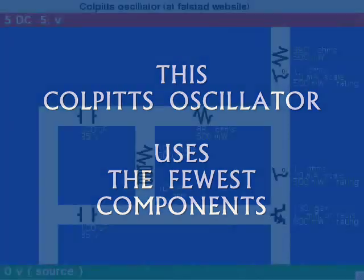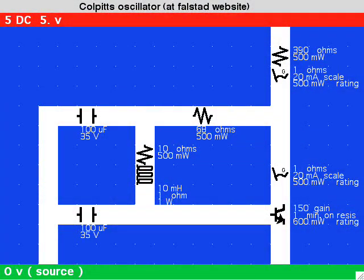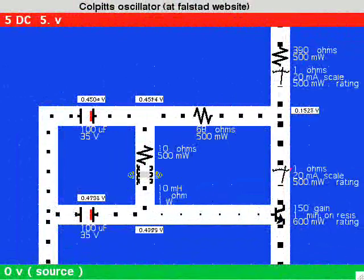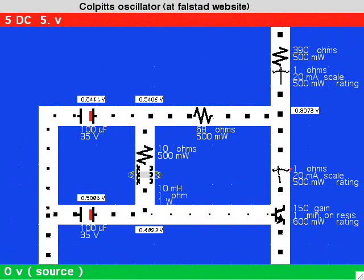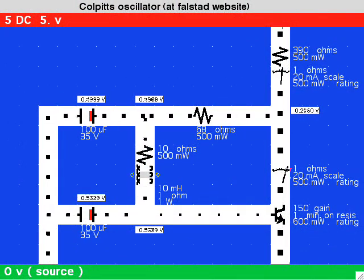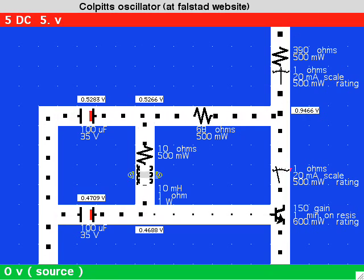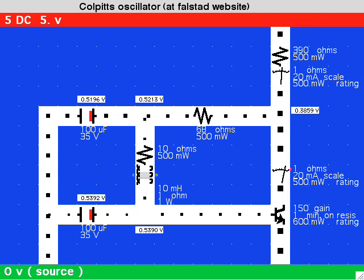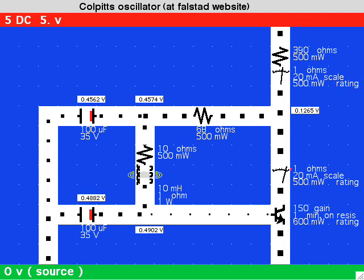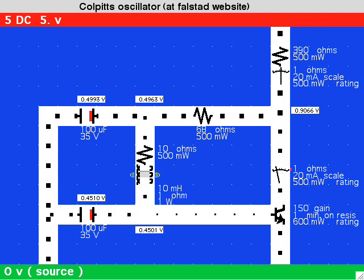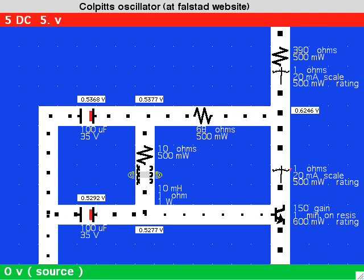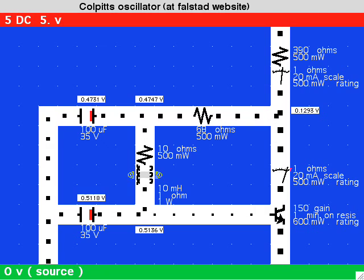This Colpitts variation was found at the Falstad.com website, an excellent site with a great variety of electronic circuits with simulations. Even though this one has fewer components than the Colpitts oscillators typically seen, it takes a lot of adjustments to obtain the oscillations in the first place, and to get the desired amplitude, current flow, and voltage swings.